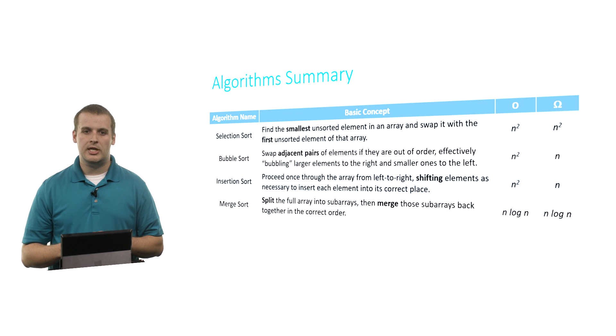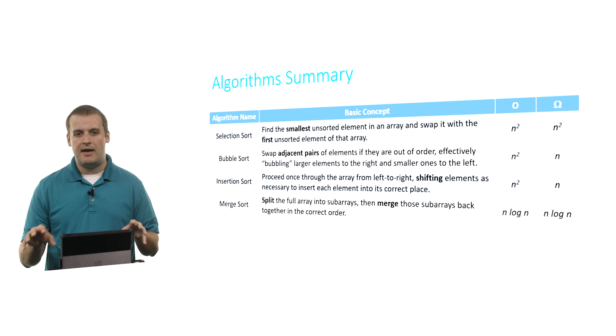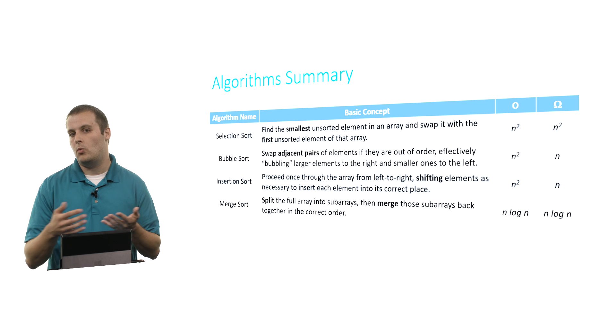Merge sort, the key word here is split and merge. We split the full array, whether it's six elements, eight elements, 10,000 elements. We split it down by half, by half, by half, until we have an array of n one element arrays, a set of n one element arrays. So we started with one 1,000 element array. And we get to the point where we have 1,000 one element arrays.